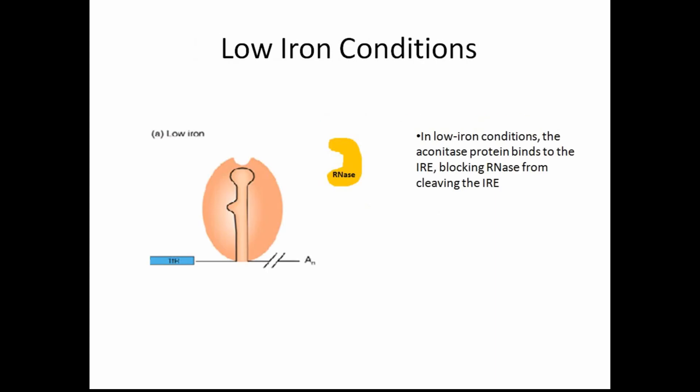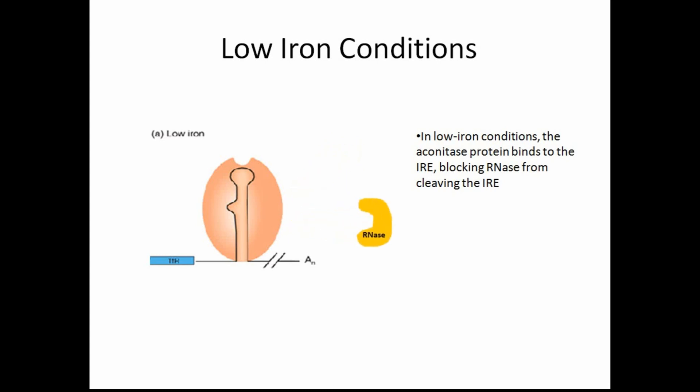In iron-poor conditions, the cell needs to be producing more TFR, and thus the mRNA needs to be stable and protected from degradation. A protein called aconitase, shown in reddish-orange here, naturally binds to the IRE under these conditions. The aconitase acts as a kind of shield, protecting the IRE from attack by the RNases. The mRNA is then stable and can go on to be translated into TFR.